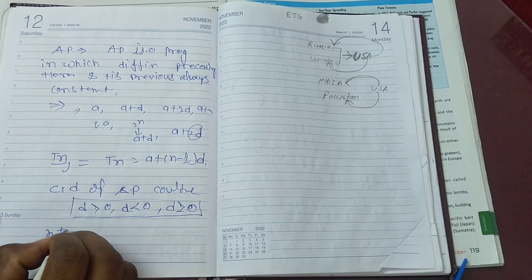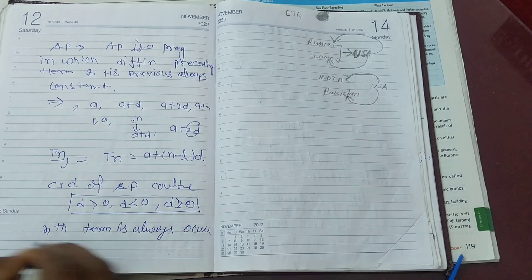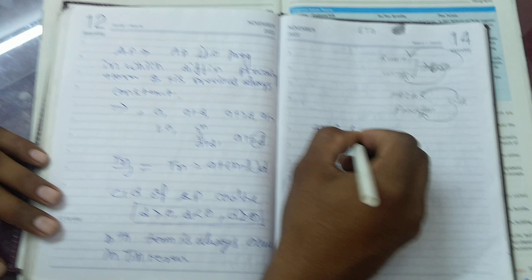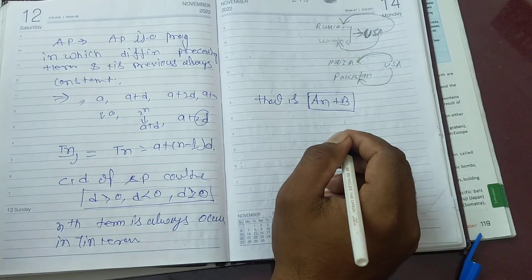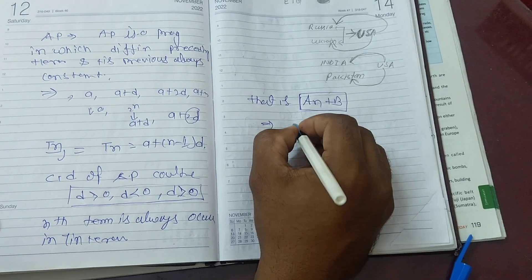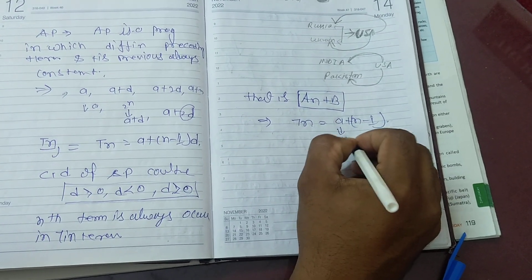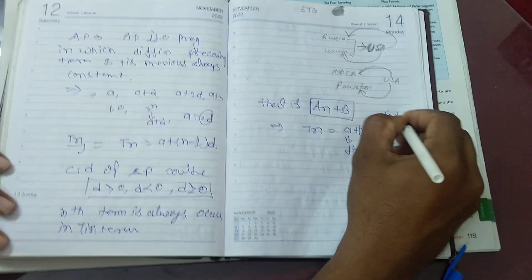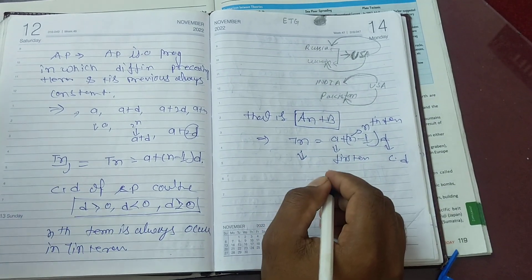The N-th term of an AP always occurs in linear form, that is AN + B. We can simplify the formula: TN = A + (N-1)·D, where A is the first term, N represents the N-th term, and D means the common difference. The N-th term TN can also be called the last term of the AP.